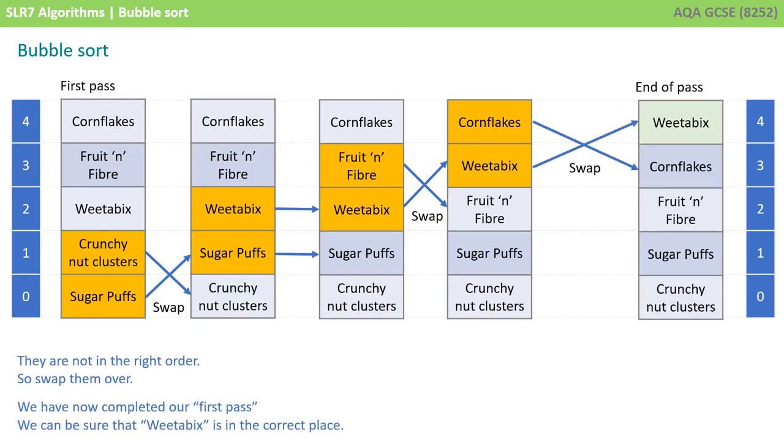Now, we've completed what we call our first pass. What we can be sure of is that Weetabix is now in the correct place. In effect, it's bubbled up to the top of the list. We now have to perform a second pass.